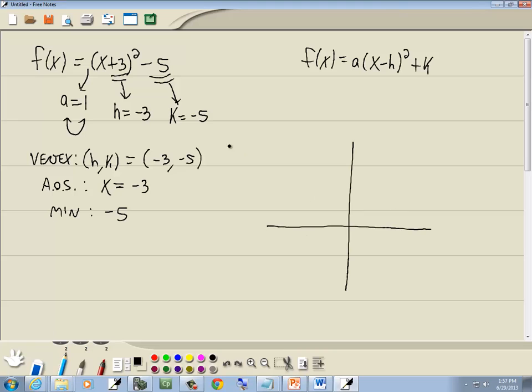Now the graph. Vertex is negative 3, negative 5. 1, 2, 3, 4, 5, which is right here. It's going to open up. Now one easy point to get, just assuming your vertex is not too close to it, is your y-intercept.